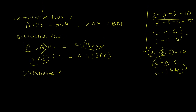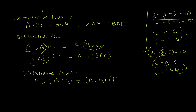The distributive laws govern how one operation distributes over another. A union (B intersection C) equals (A union B) intersection (A union C). This can be verified with a Venn diagram or logical reasoning: taking the union of A with whatever is common between B and C is the same as intersecting the union of A with B and the union of A with C.